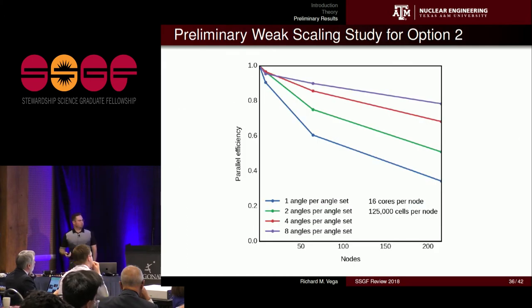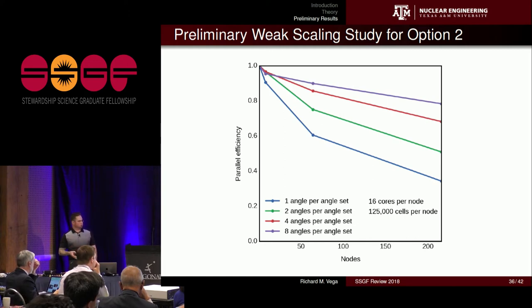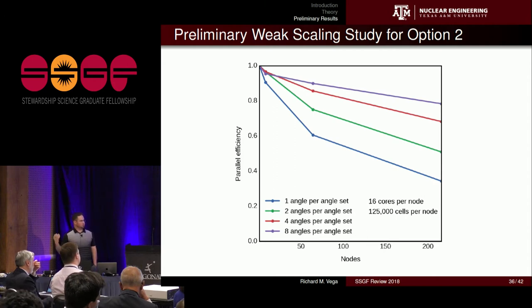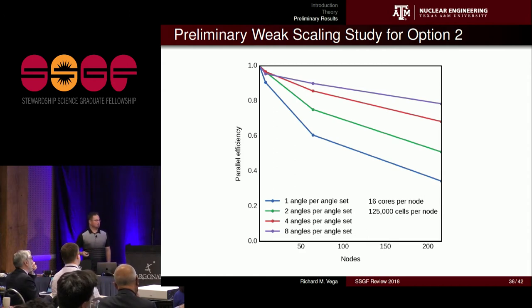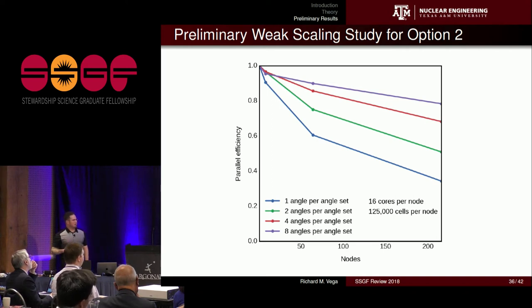We have preliminary weak scaling data for parallelization option two. The parallel efficiency increases as more angles are added to the quadrature set, meaning more angles are swept simultaneously. This makes sense because more simultaneous angles means fewer cuts per angle and fewer additional cells introduced. The test used 125,000 cells per node with 16 cores per node, scaling out to roughly 3,200 cores, and we maintained about 80 percent parallel efficiency.